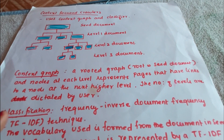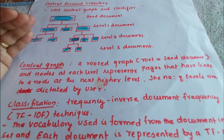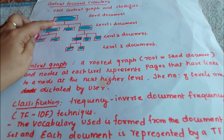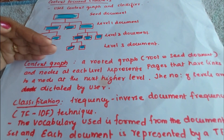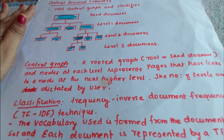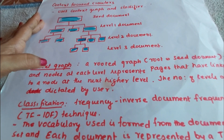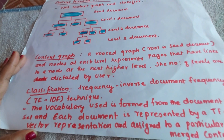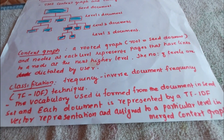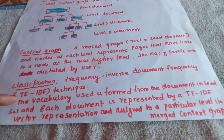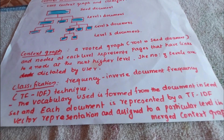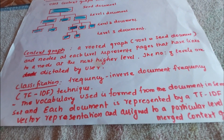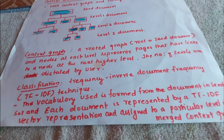The context focused crawler uses a context graph and a classifier together. The context graph is a rooted graph where the root is a seed document. Nodes at each level represent a page that has a link to the node at the next higher level, and the number of levels is dictated by the user. The classification performed here is called the term frequency–inverse document frequency technique, written as TF-IDF. The vocabulary is formed from documents in the seed set, and each document is represented by a TF-IDF vector representation and assigned to a particular level in the merged context graph.